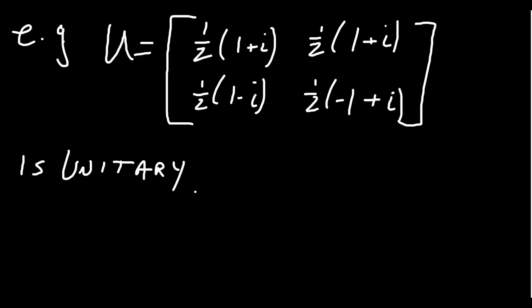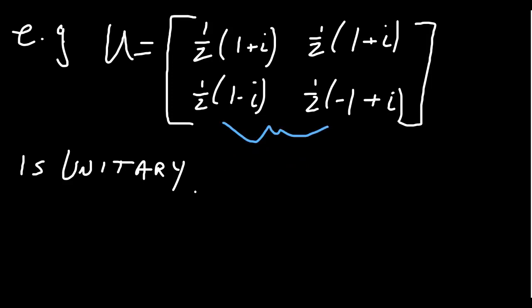Next I want to give an example of a unitary matrix — a complex matrix where U* U equals the identity, using the conjugate transpose. Pause the video right now and double-check that this matrix is unitary by the definition.